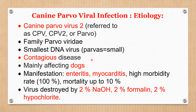Parvo affects mainly dogs. The main manifestations are in the intestine and heart. In the intestine, it causes severe enteritis and gastroenteritis. In the heart, it causes myocarditis. Morbidity rate is very high — it may reach 90 to 100%. Mortality is up to 10%, so this is a very serious and dangerous disease.